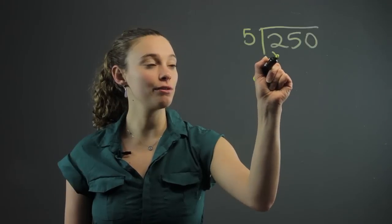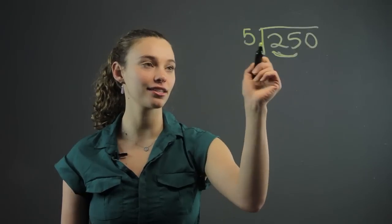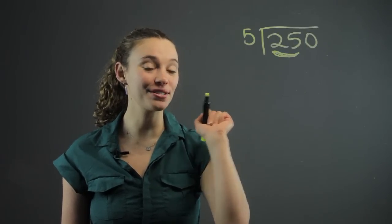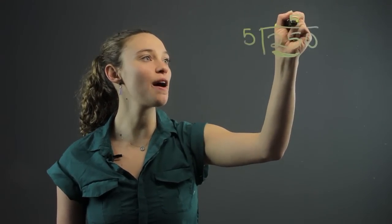Now we include both numbers. If it doesn't go into the first number, you start including the second digit. Does 5 go into 25? Yes, it goes in 5 times.